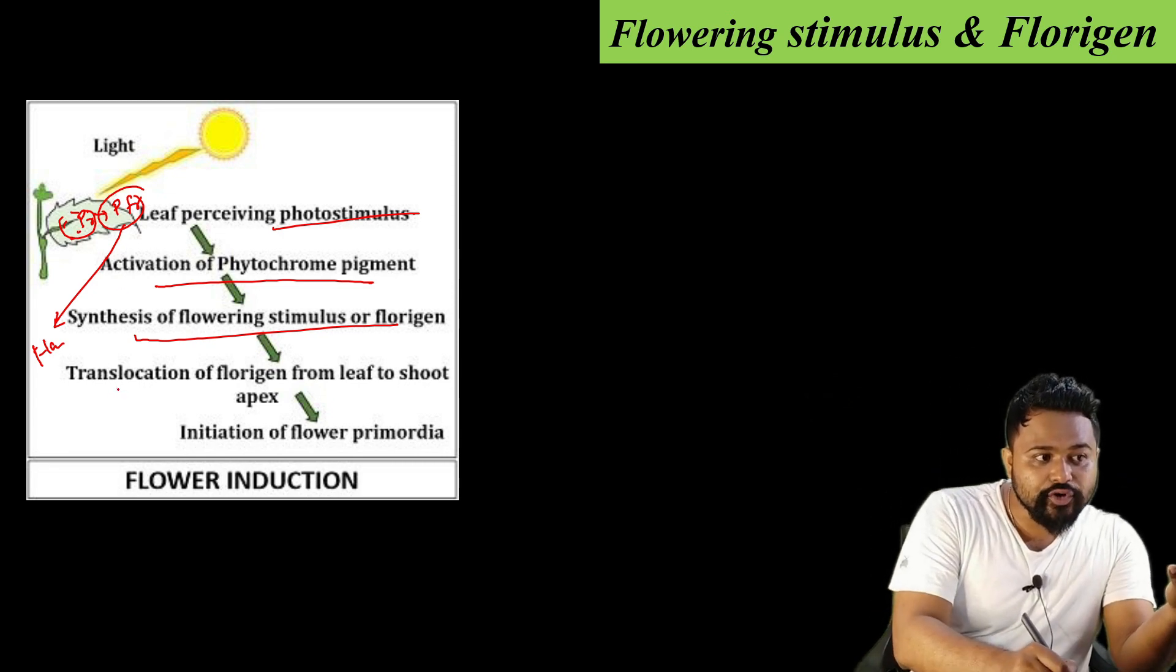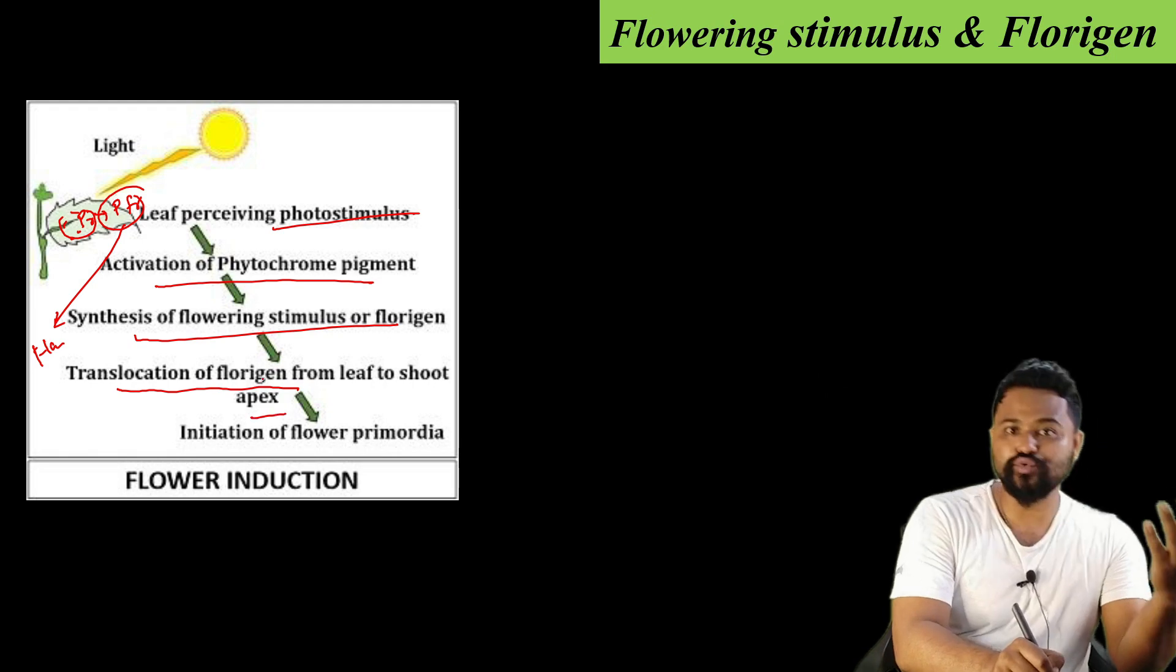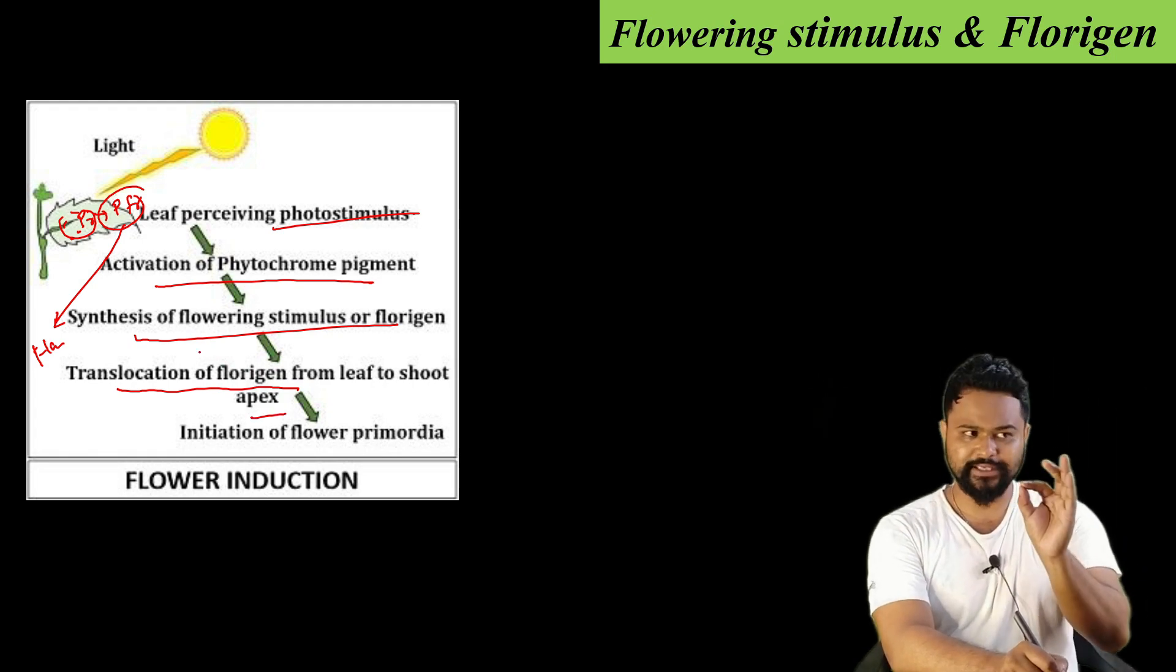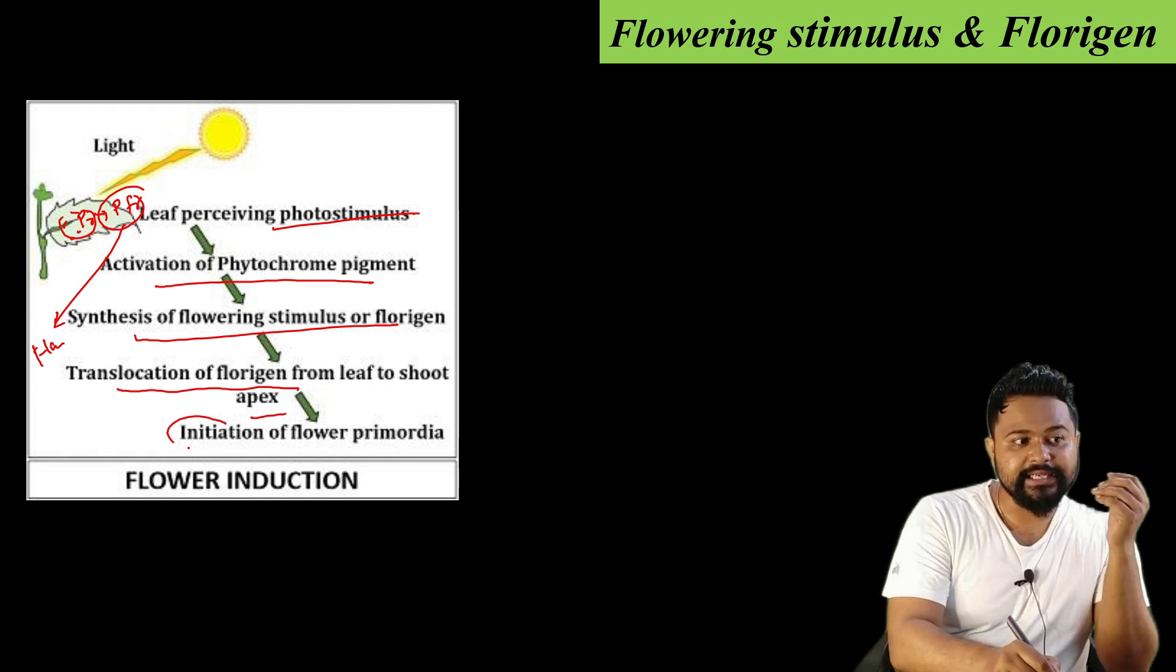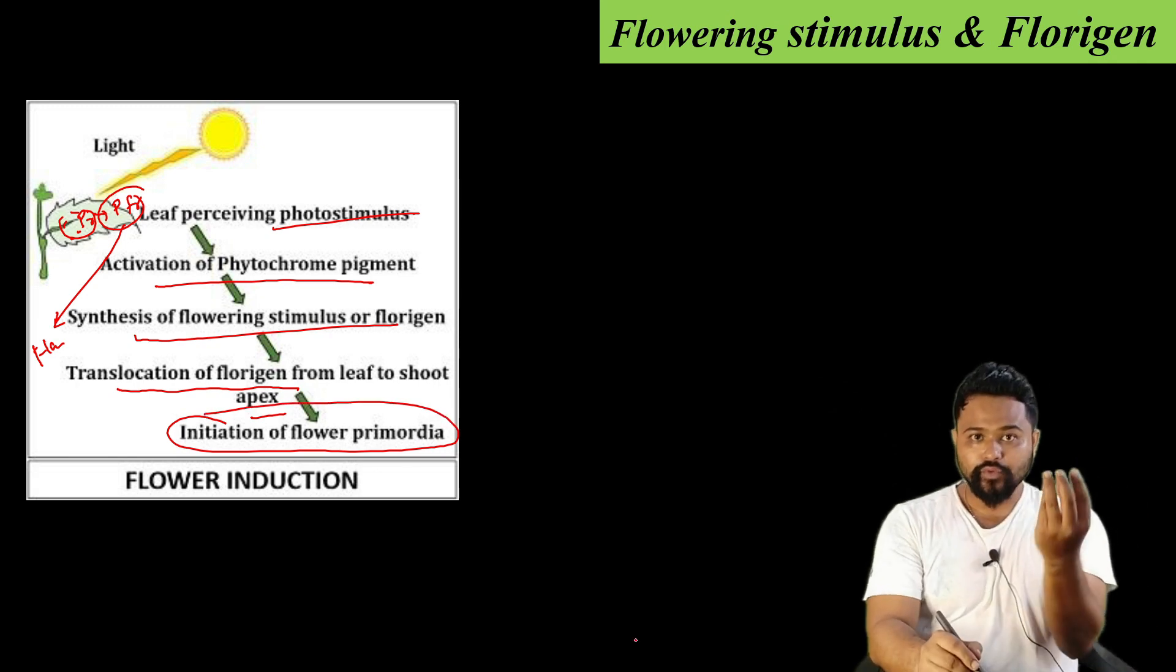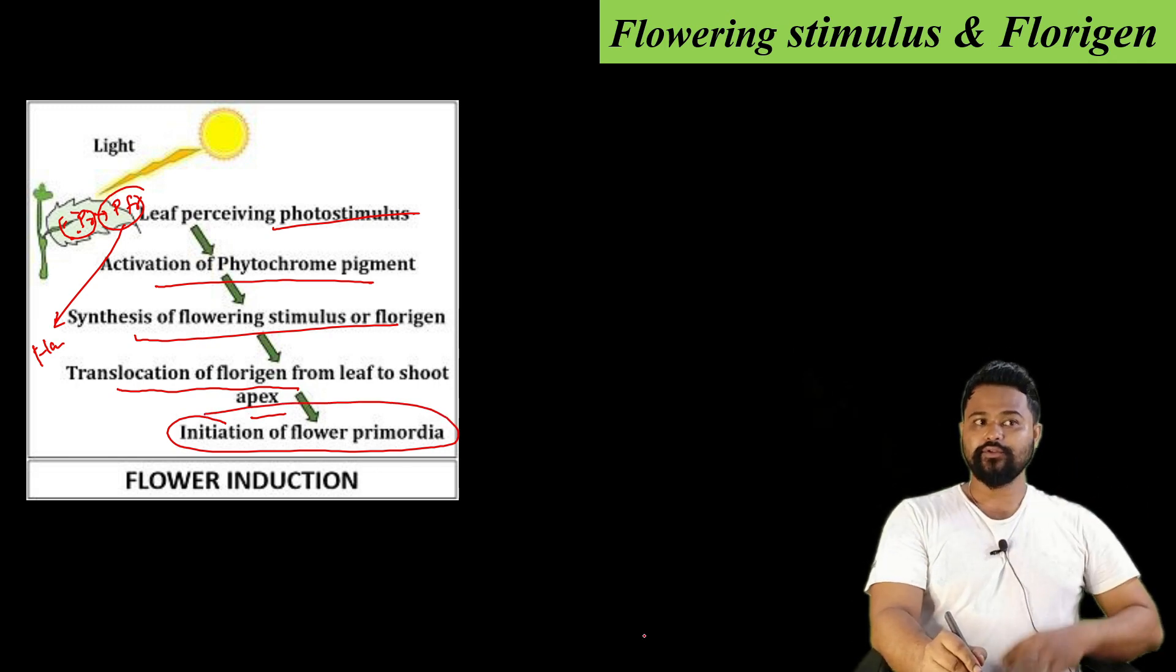This florigen hormone undergoes translocation of florigen from leaf to shoot apex, leading to the initiation of flower primordia. So this is flower induction.